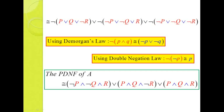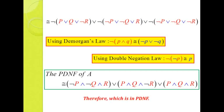Applying De Morgan's law to the first term gives: negation P AND negation Q AND R. Applying to the second term: negation of negation P = P, negation of negation Q = Q, and R remains, giving P AND Q AND R. Applying to the third term gives P AND Q AND R. Therefore, the PDNF of the given statement is the sum of these three min terms — this is the principle of disjunctive normal form of the given statement A. I hope you are enjoying this session. Thank you.